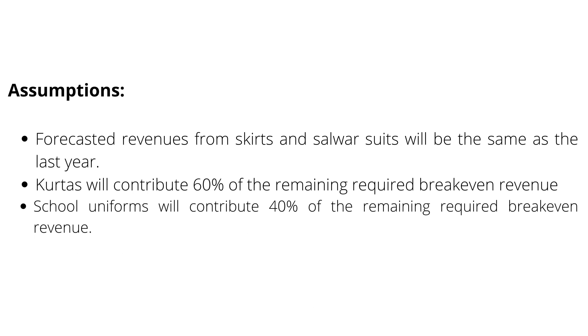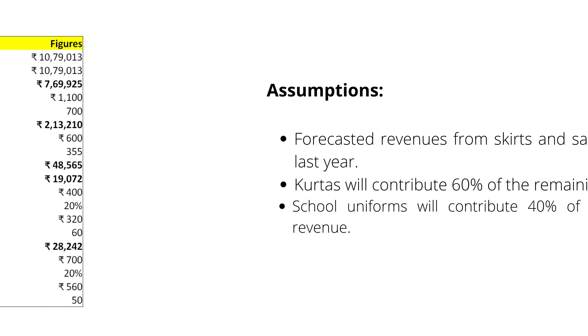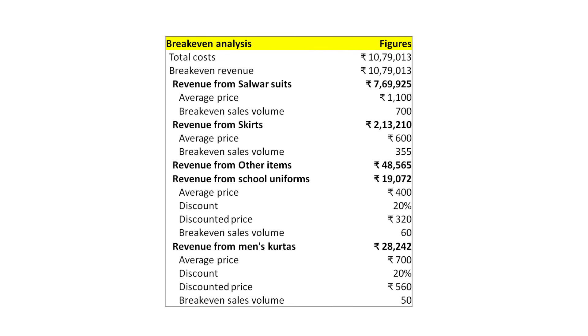As there is no impact on the indirect costs of the business, Sundari is now ready to do break-even analysis using forecasted numbers. Since Sundari will have four main products, her break-even calculations are not very simple. She has to make certain assumptions as we can see here. Sundari calculates forecasted total costs consisting of direct and indirect costs, and using this number along with the assumptions related to revenues, she makes break-even calculations shown here. Sundari now knows how many uniforms and how many kurtas she needs to sell, along with last year's sales volumes for salwar suits and skirts, to achieve break-even.